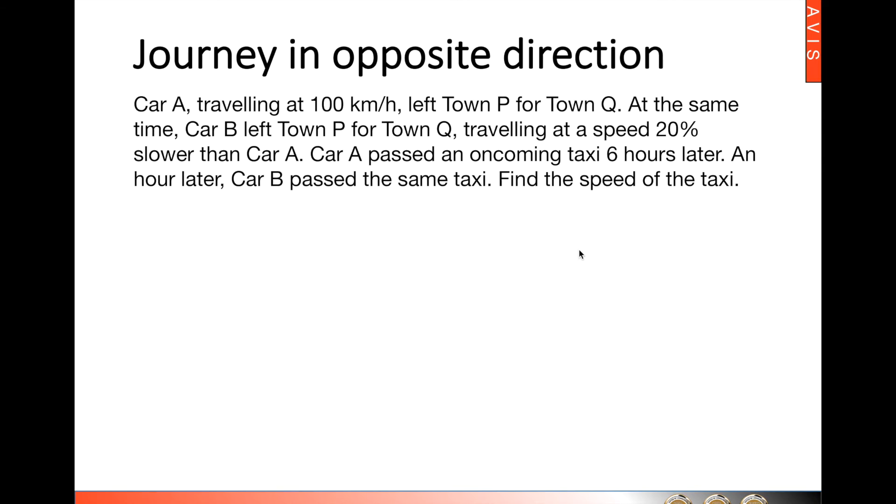First, we will be able to find out what is the speed of car B. We were told that car B was travelling at a speed 20% slower than car A, which means car B would have a speed of 80% of what car A has.